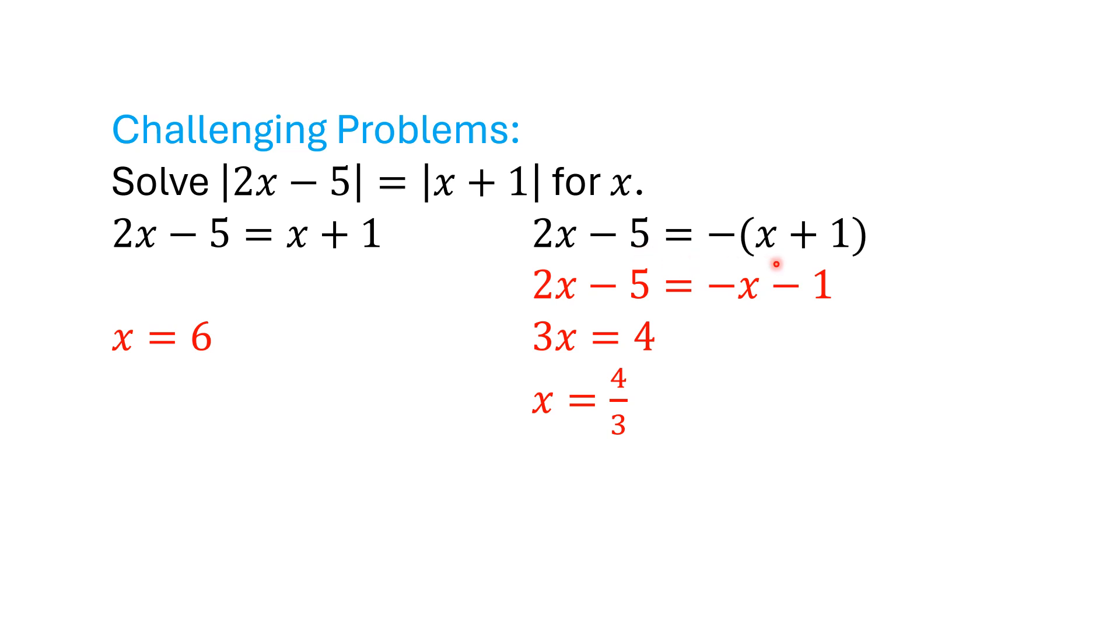And on the other side, we have 2x - 5 = -x + 1, or 2x - 5 = -x - 1. 3x = 4. x = 4/3.